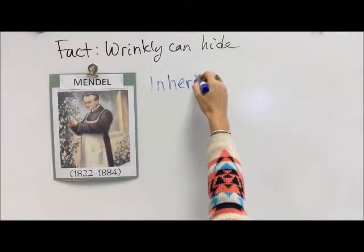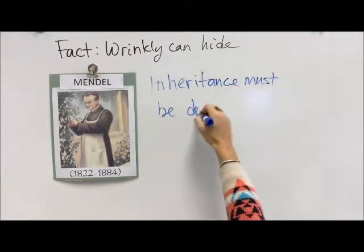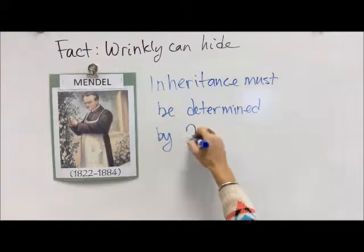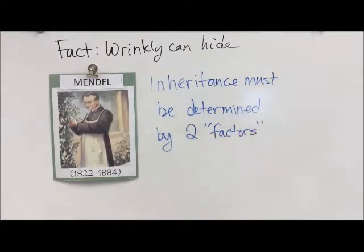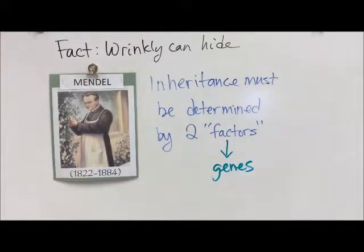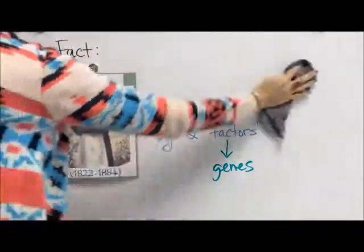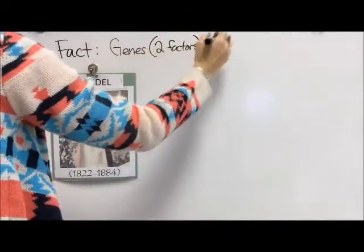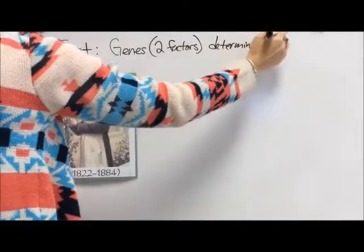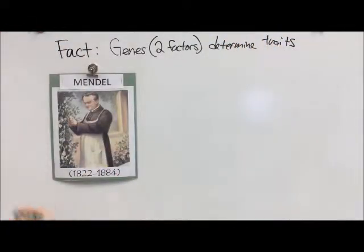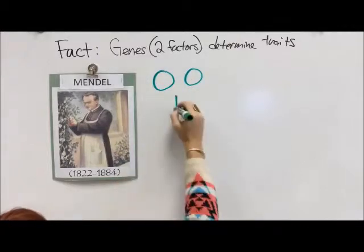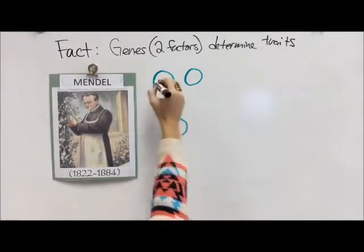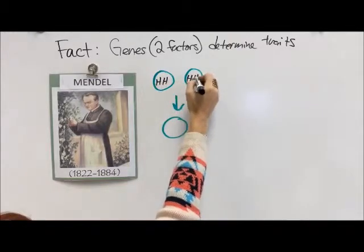He thought to himself: I don't understand how this could work out. He thought and thought, and then he realized that inheritance must be determined by two factors — because that's the only way you can get a 75-25 split. These factors are what we now call genes. Every time I draw genes on the board I draw two chromosomes with two slots. He figured that out without any electron microscope — it wasn't until a hundred years later that we figured out what DNA looks like.